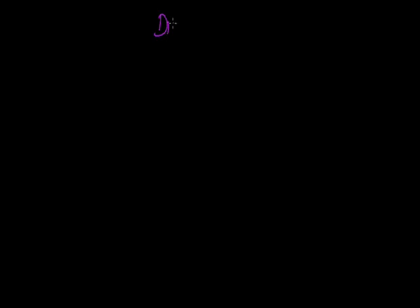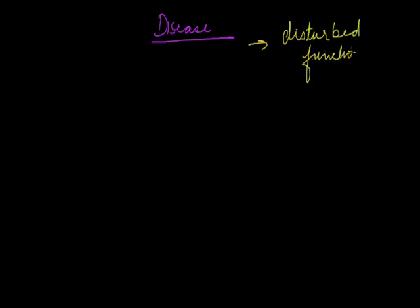Now let us talk about disease. Disease is a condition of the body, or a part of it, in which functions are disturbed. It can also be defined as morphological, physiological, or psychological disturbance in the body or body parts, caused by external agencies which may be non-parasitic or caused by viruses, bacteria, etc. The term disease means dis-ease, or discomfort — when you are not feeling any comfort in your body.